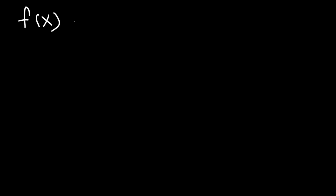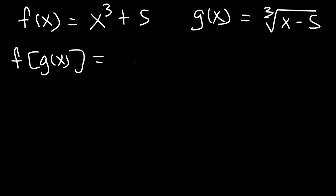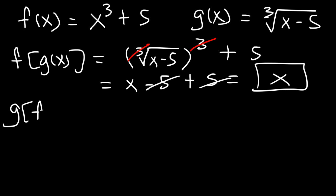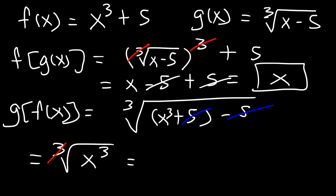Here's the last example: let f(x) = x³ + 5 and g(x) = ∛(x − 5). Are they inverses of each other? For f(g(x)): the outside function f is x³ + 5, and replacing x with ∛(x − 5) gives (∛(x − 5))³ + 5. The cube root raised to the third power cancels, leaving x − 5, and adding 5 gives x. For g(f(x)): g is ∛(x − 5), and substituting f gives ∛(x³ + 5 − 5) = ∛(x³). The cube root and cube cancel, leaving x. So f and g are inverses of each other.